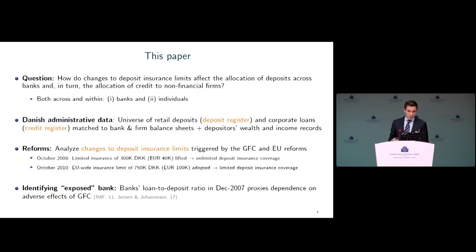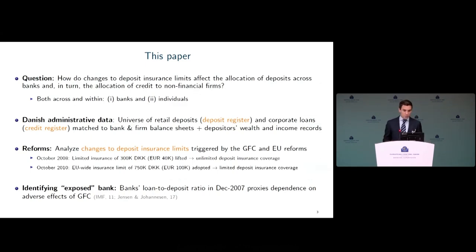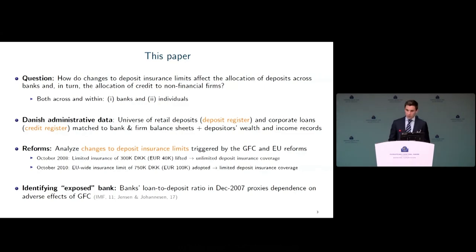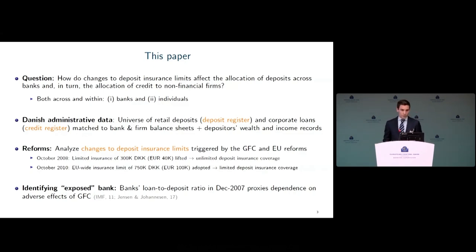That leads me to the question we try to answer in our paper. We study whether changes to deposit insurance limits affected the allocation of deposits across banks and in turn the allocation of credit to non-financial firms in the economy. We address these questions both within and across banks, individuals, and firms.